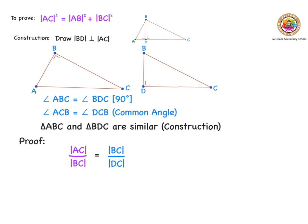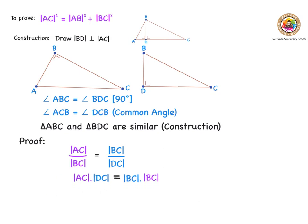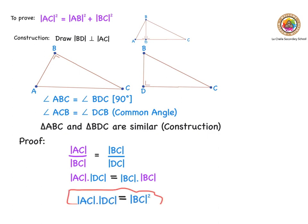That gives us: AC over BC is equal to BC over DC. Cross-multiplying gives us AC times DC is equal to BC times BC, which tidies up to: AC times DC is equal to BC squared. I'm going to put a red box around that and now bring these two equations together.